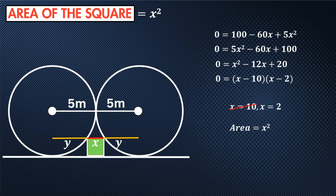So let's find the area x squared, which is 2 squared, which is 4. The units are meters squared. That is a really nice question.